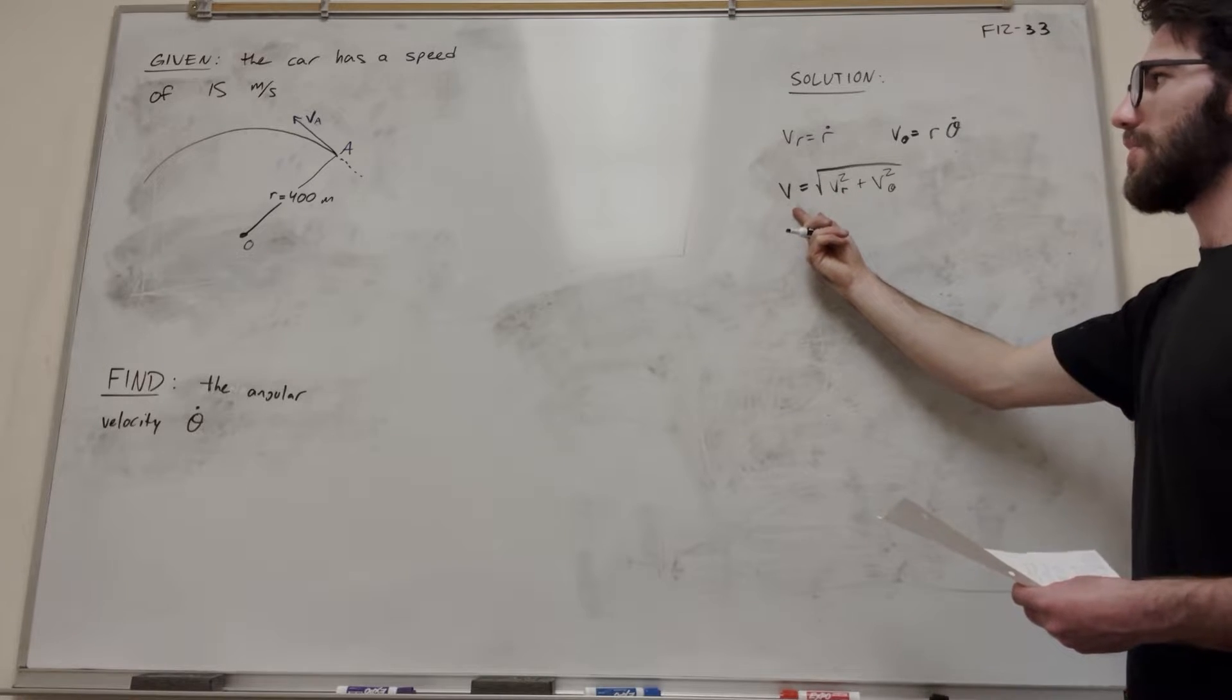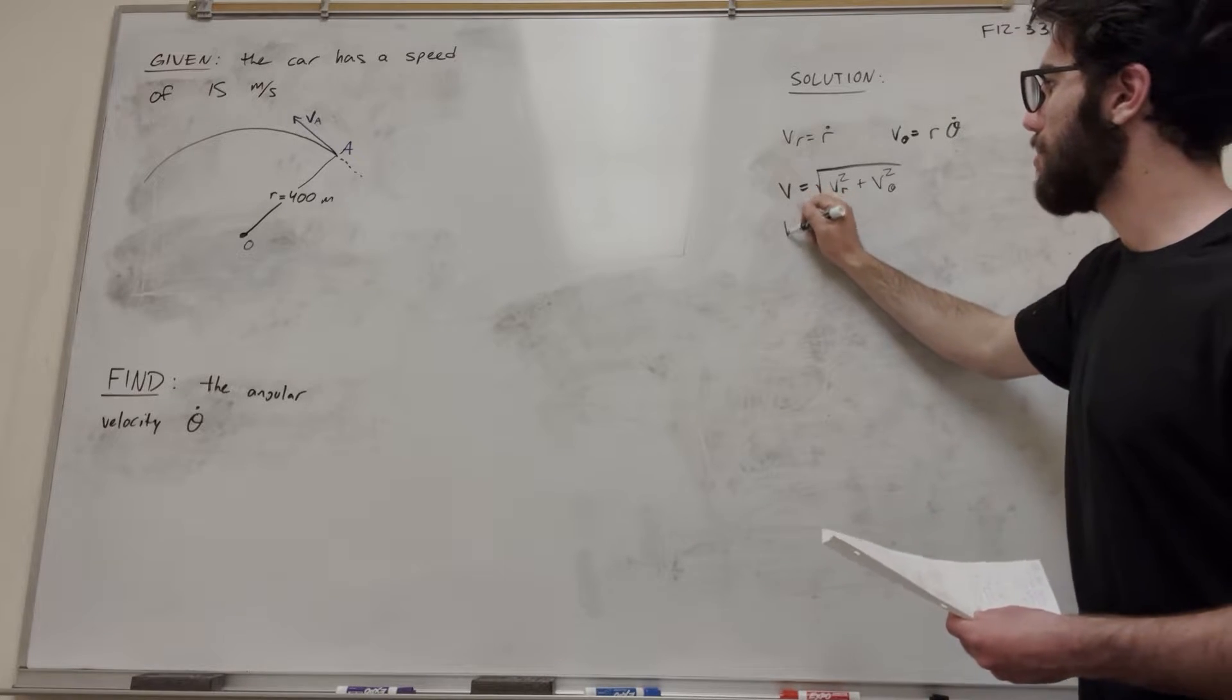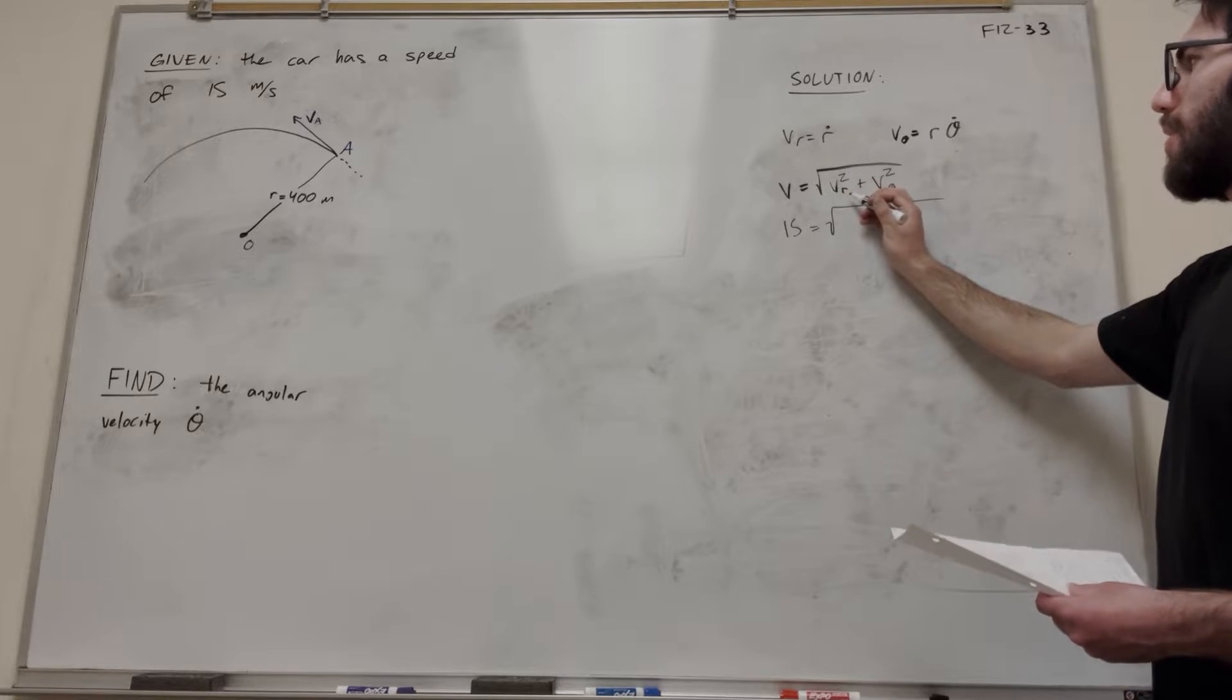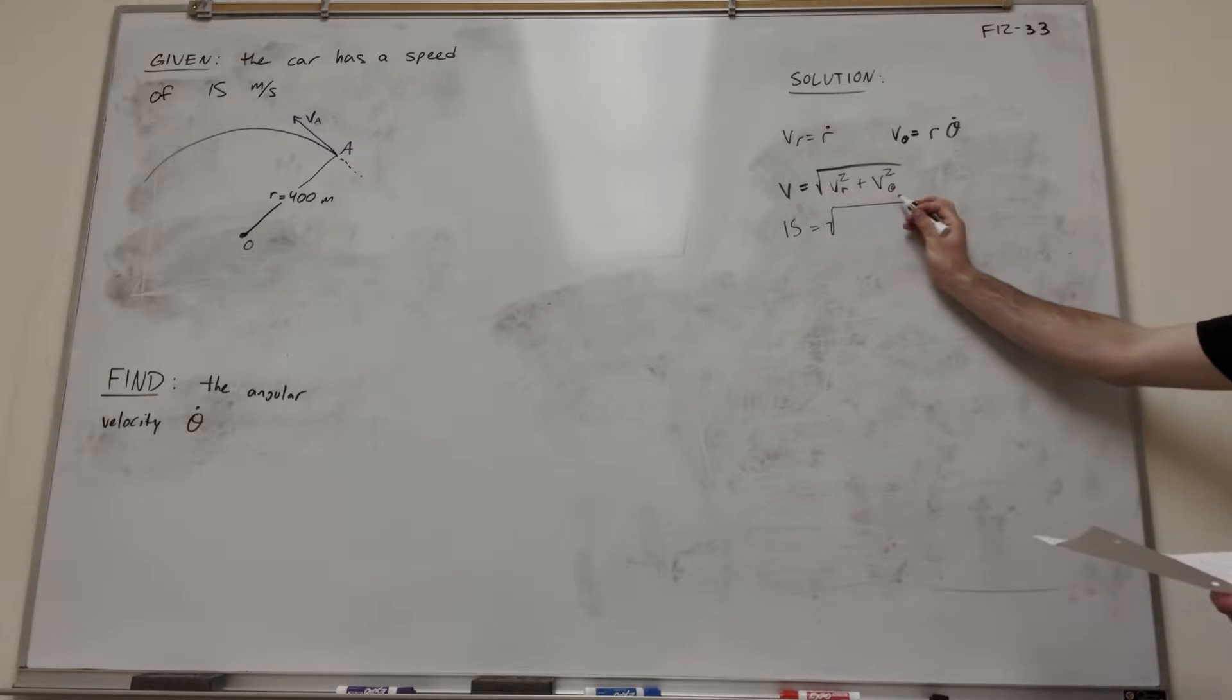And we know the magnitude of the velocity is 15 meters per second. So we can go ahead and put in 15 there. This is equal to the square root of the transverse component squared plus the radial component squared.